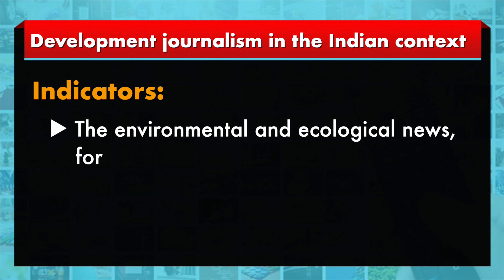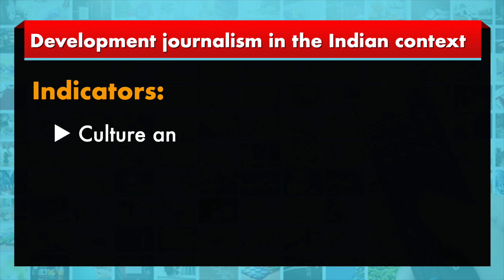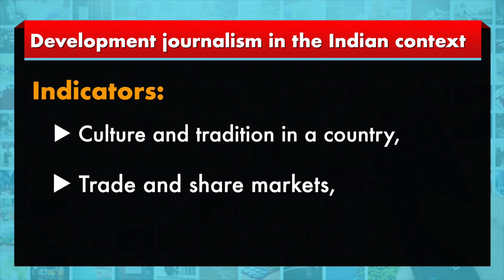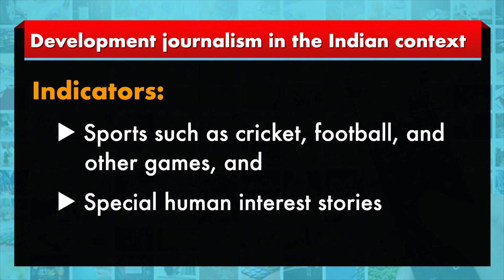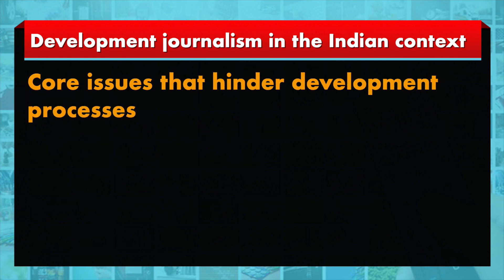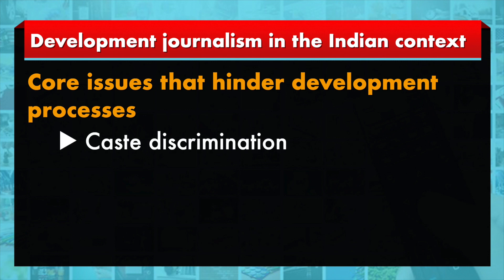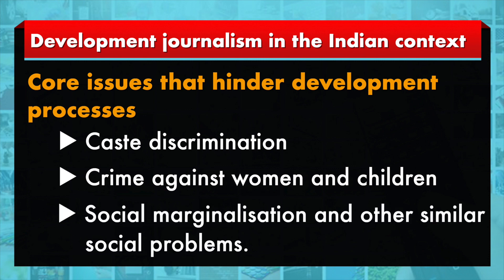When we look at development journalism in the Indian context, there were many indicators added to it — for example, environmental and ecological news, foreign news and features, news on globalization and international markets, news about culture and tradition in a country, information on trade and share markets, news about sports such as cricket, football and other games, and special human interest stories. Apart from this, it also focuses on core issues that hinder the development process, like discrimination in caste, crime against women and children, social marginalization and other similar social problems.